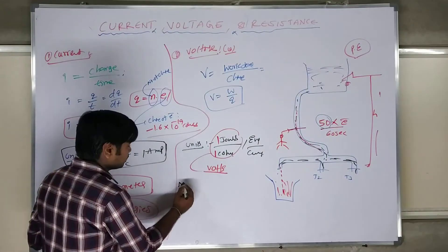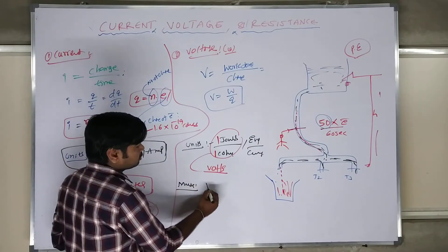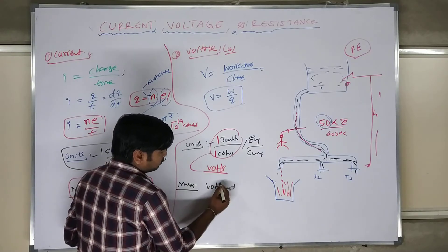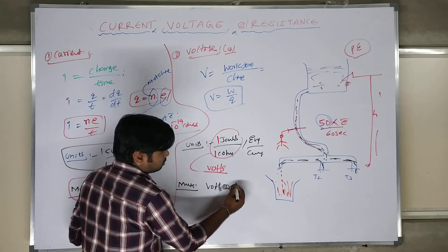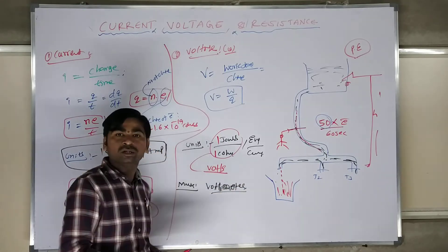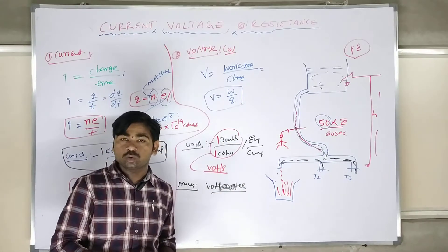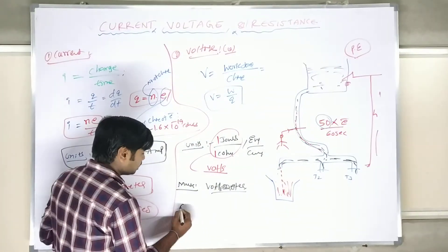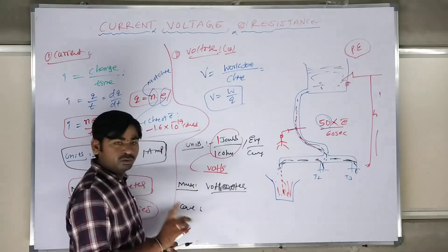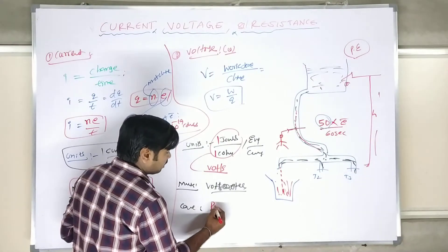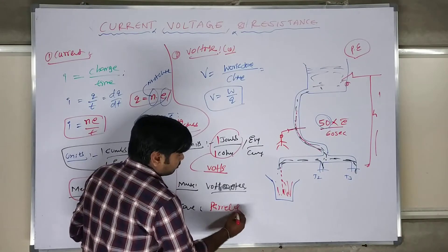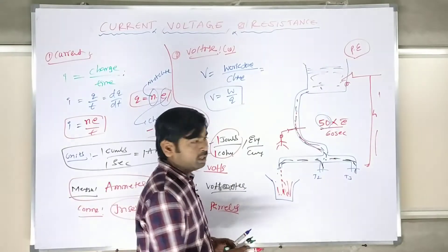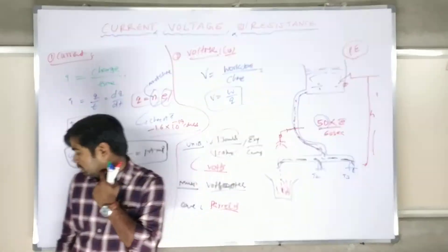To measure voltage, we use the instrument called a voltmeter. A voltmeter should always be connected in parallel, because you are measuring pressure across two points. That is why you connect the voltmeter in parallel.